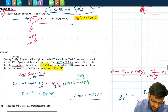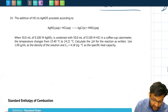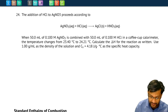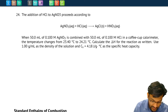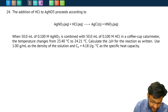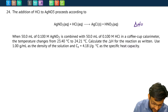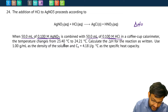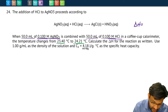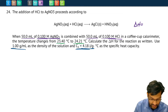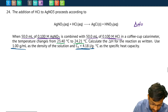Now let's look at number 24. Again, if you haven't done it already, please pause the video and unpause when you think you have an answer. In number 24, they give us the balanced chemical equation and again ask us to find the delta H for the reaction as written. They give us both reactants: 50 mL of a 0.100 molar solution of silver nitrate and 50 mL of a 0.100 molar solution of HCl, a temperature change from 23.40°C to 24.21°C, a specific heat capacity of 4.18, and a density of 1.00.